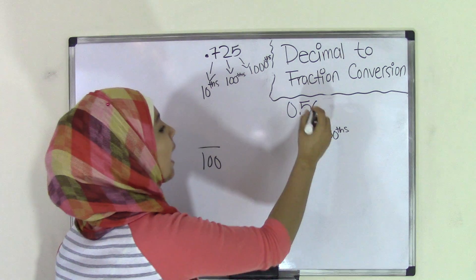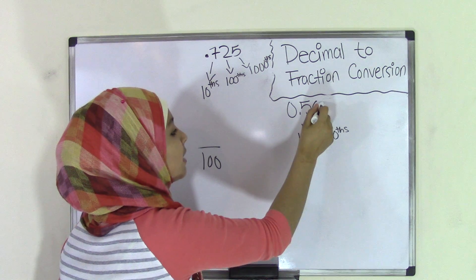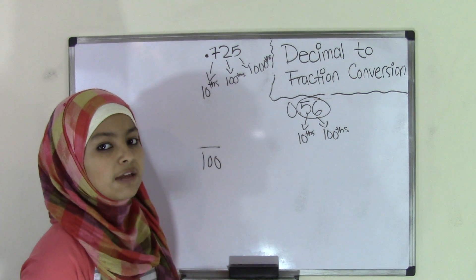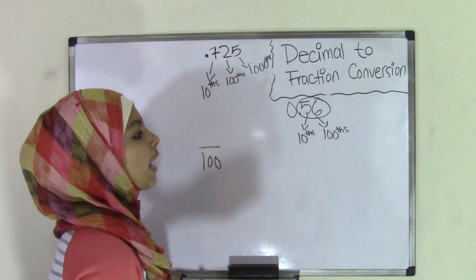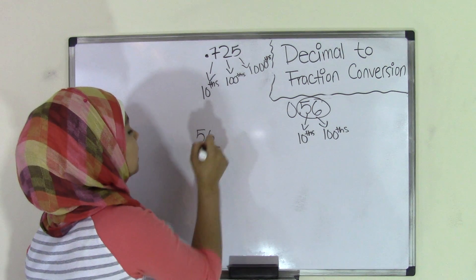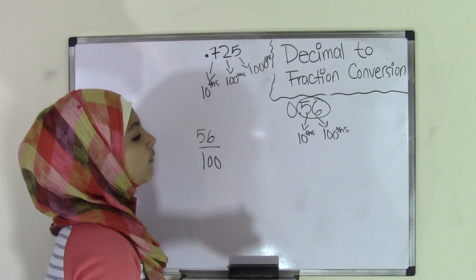Well, we know that we have the number 56. That means we have 56 hundredths, right? Because when we pronounce it, we say 56 hundredths. So that means we have 56 hundredths. So that means your numerator is going to be 56. So that means we now have our fraction.